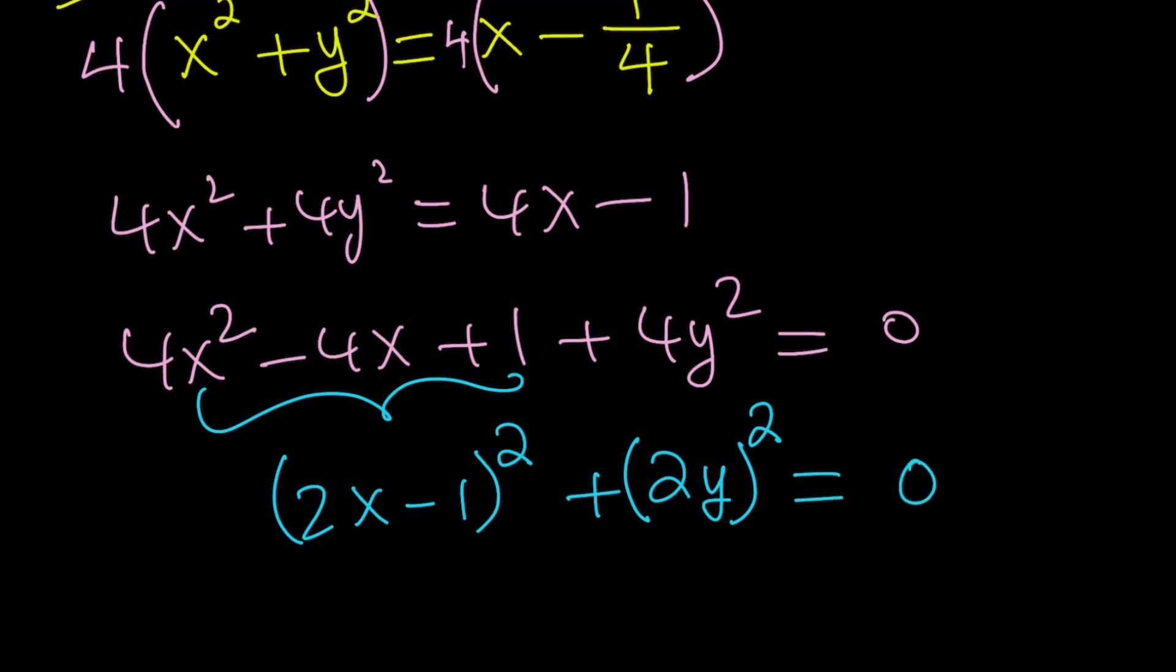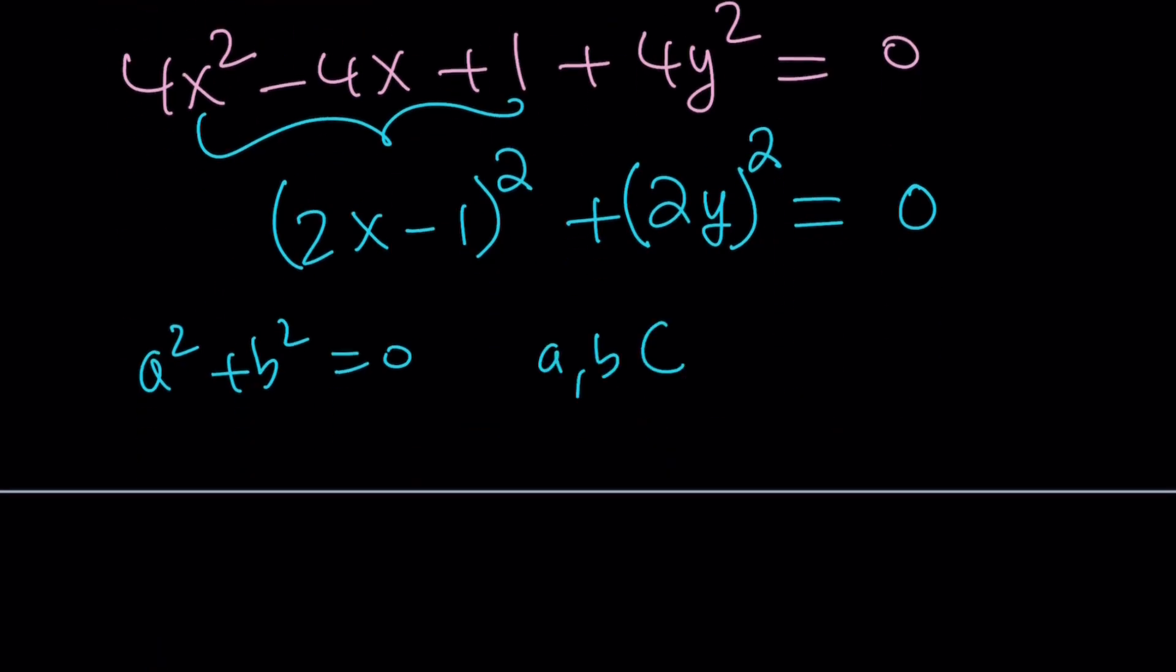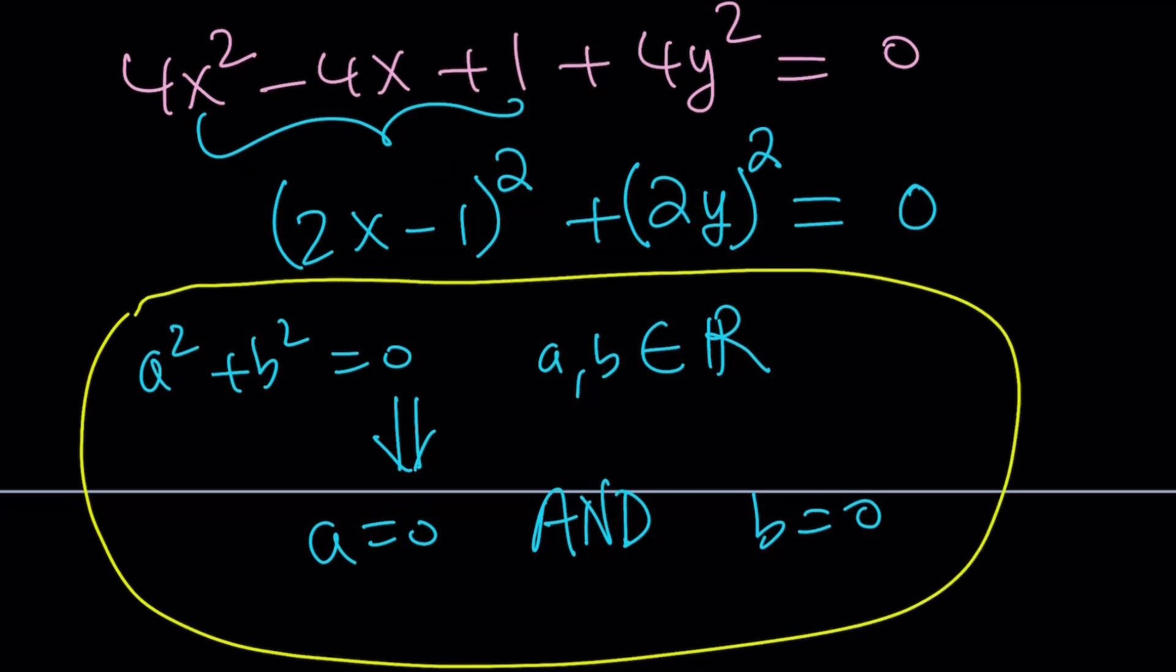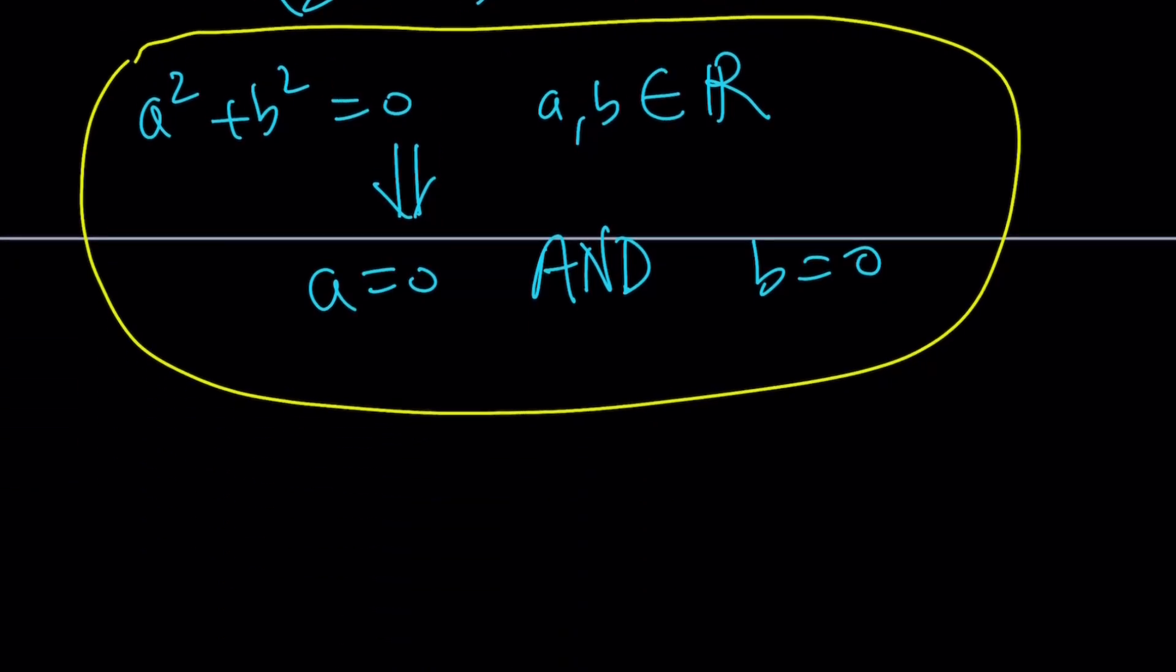Now you're thinking, what is that supposed to mean? It means we have a² + b² = 0 for a and b real numbers. What does this imply? This implies a = 0 and b = 0. This is a very important property of real numbers. Obviously, if a and b are allowed to be complex numbers, this is not necessarily true. You can say 1² + i² = 0, but i and 1 are not equal to 0 because i is not real.